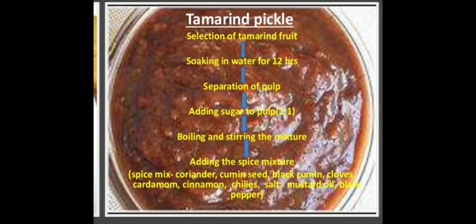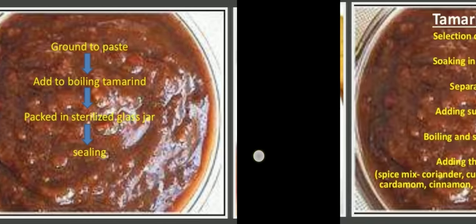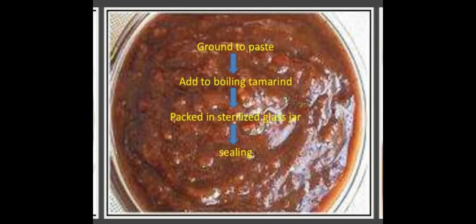For tamarind prick pickle: select tamarind fruit, soak in water for 12 hours, separate the pulp, add sugar to pulp in a 1:1 ratio, boil and stir the mixture, then add a spice mixture containing coriander, cumin seed, black cumin, cloves, cardamom, cinnamon, chillies, salt, mustard oil, black pepper, etc. The whole spices are ground to a paste and added to boiling tamarind, then packed into sterilized glass jars and sealed.